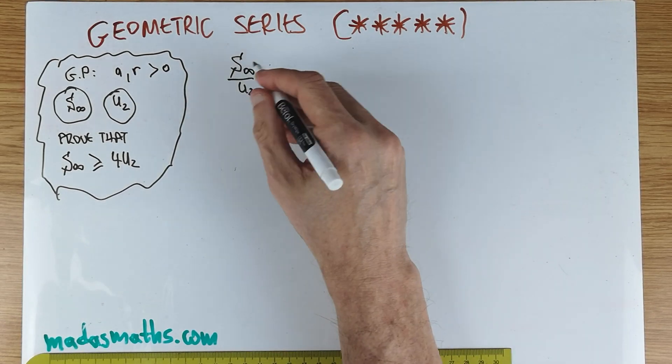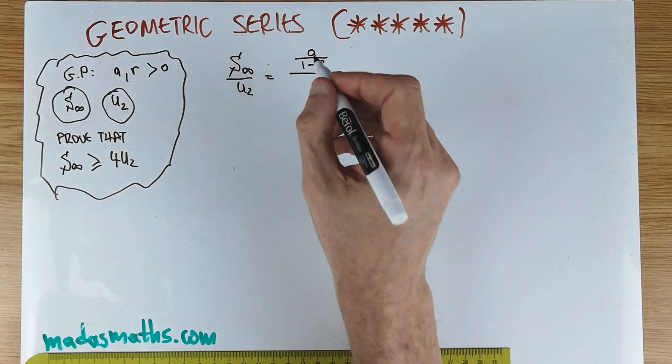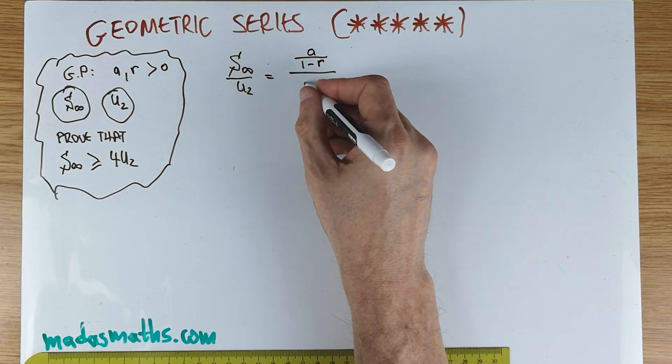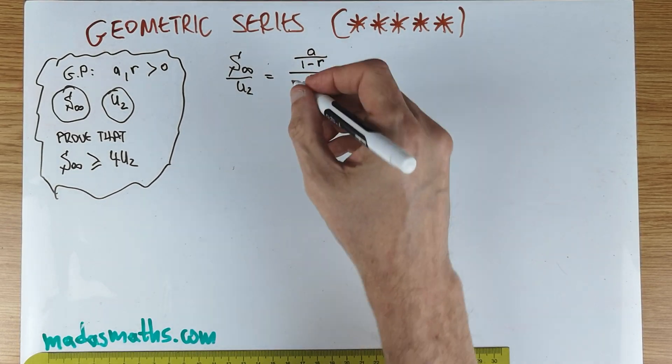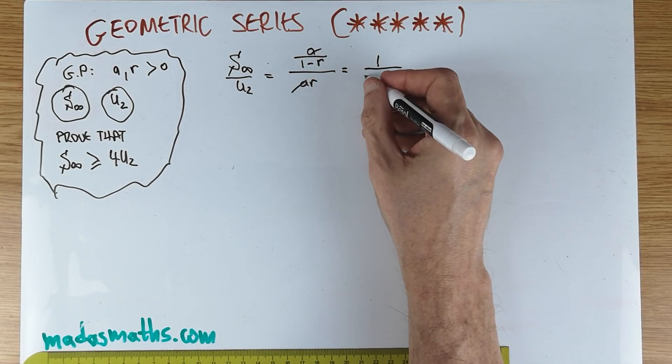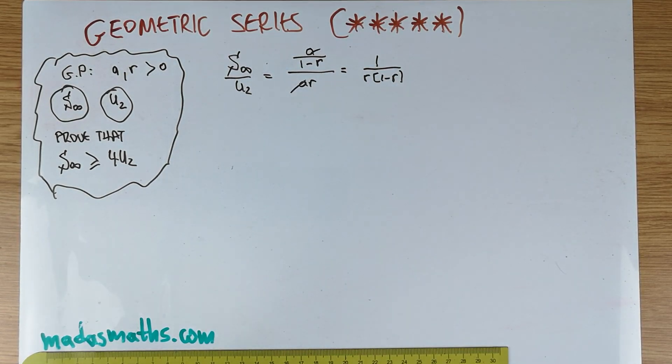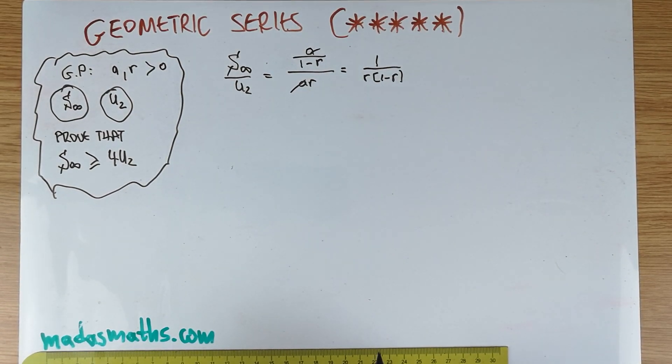For this, there are formulas. Of course, the sum to infinity, there's a standard formula: A over one minus R. And the second term is AR. The A's will cancel. And therefore, when you're manipulating your fractions, we don't make any mistakes, is this quantity here.